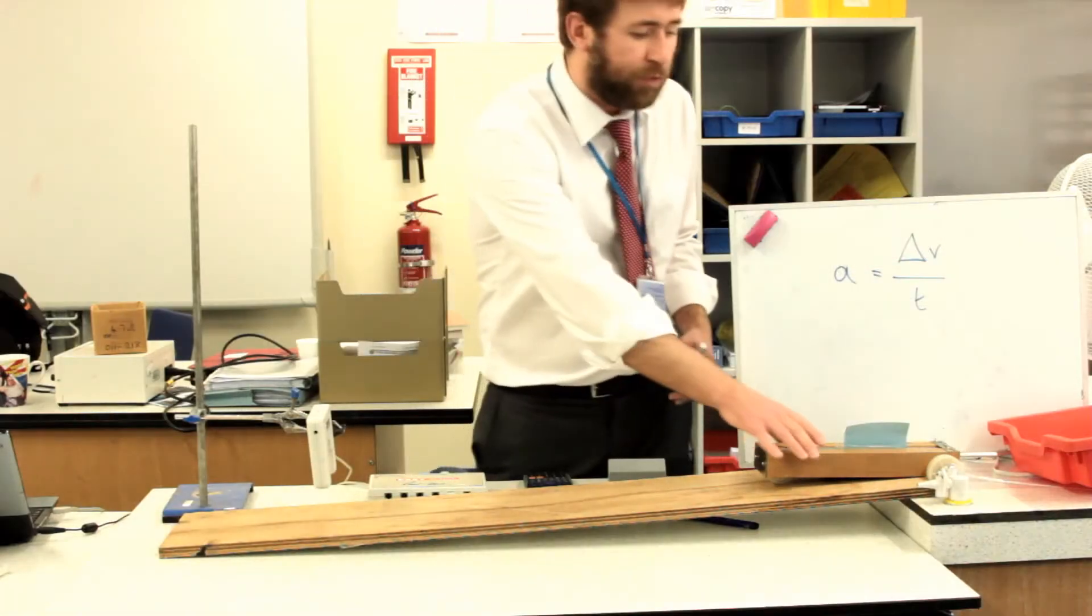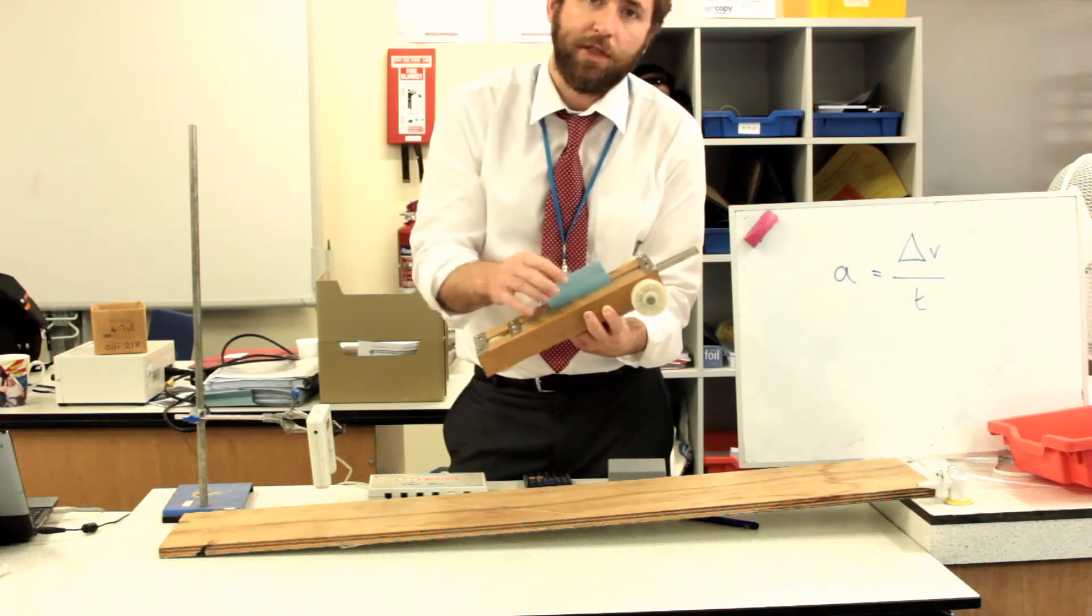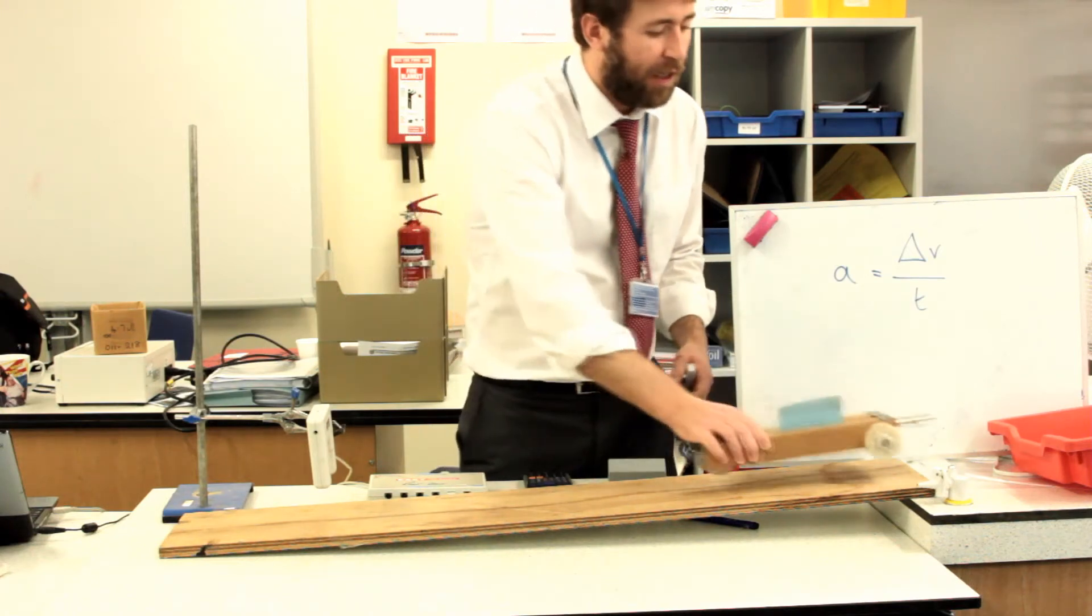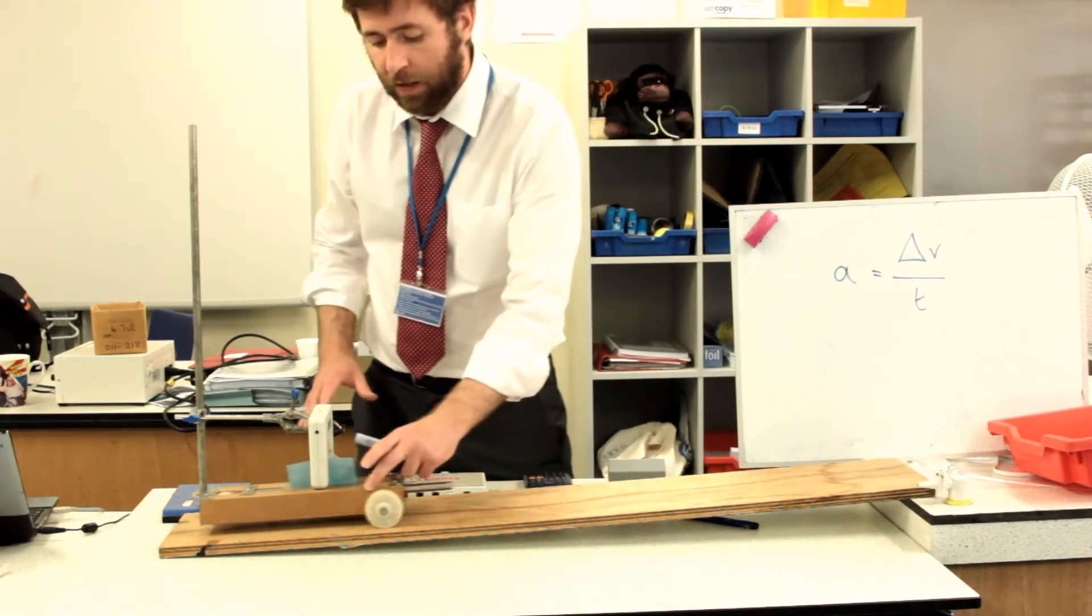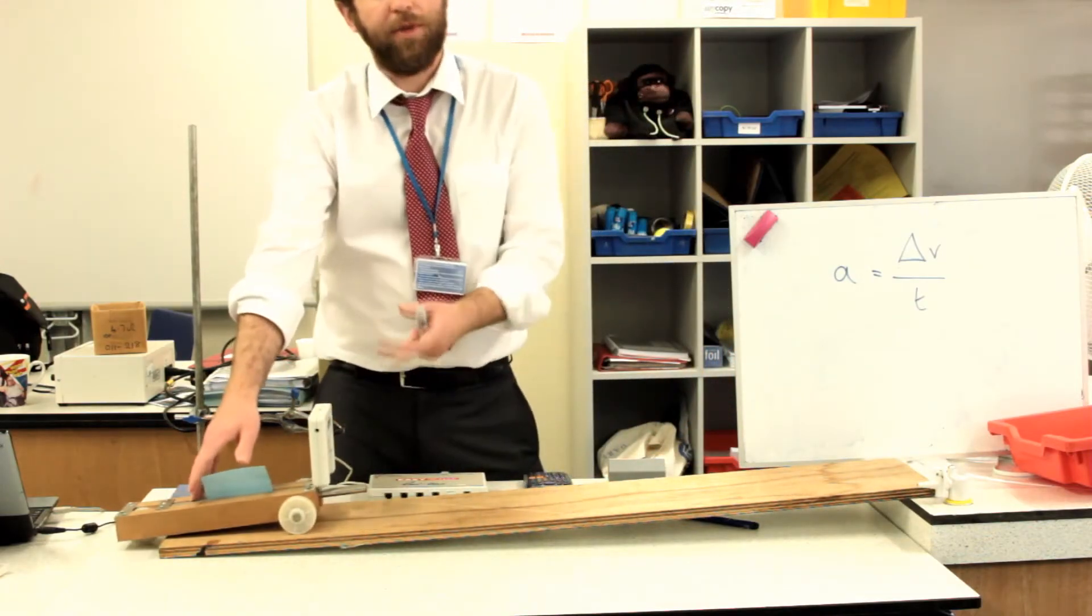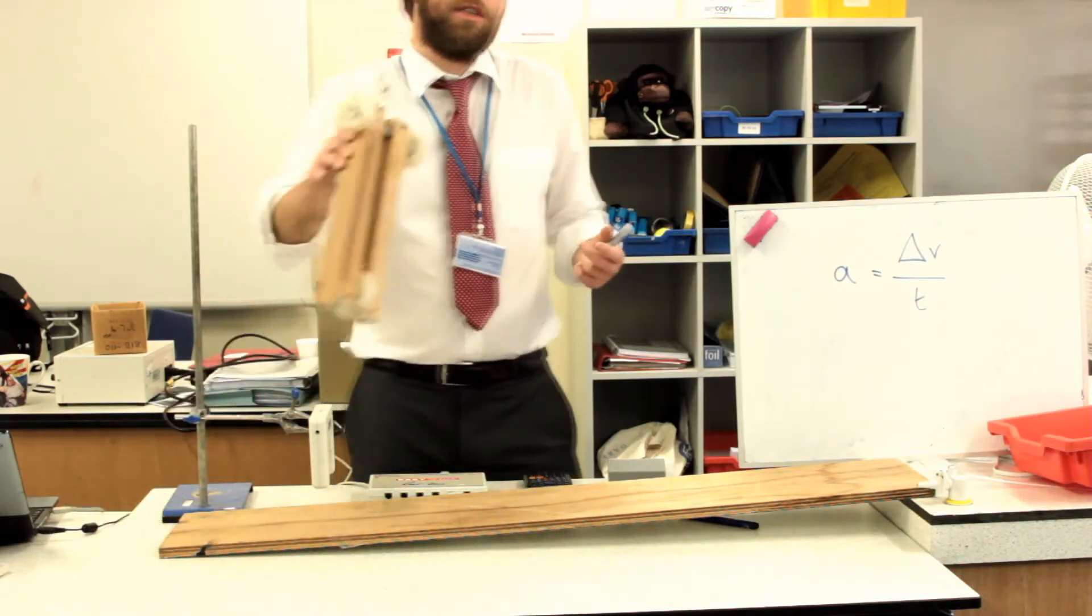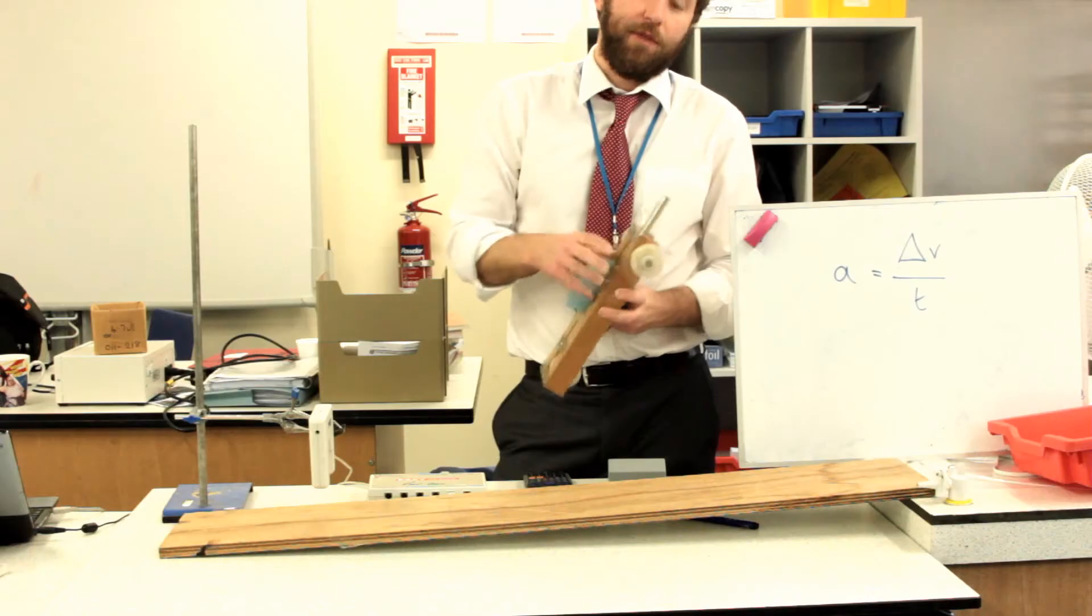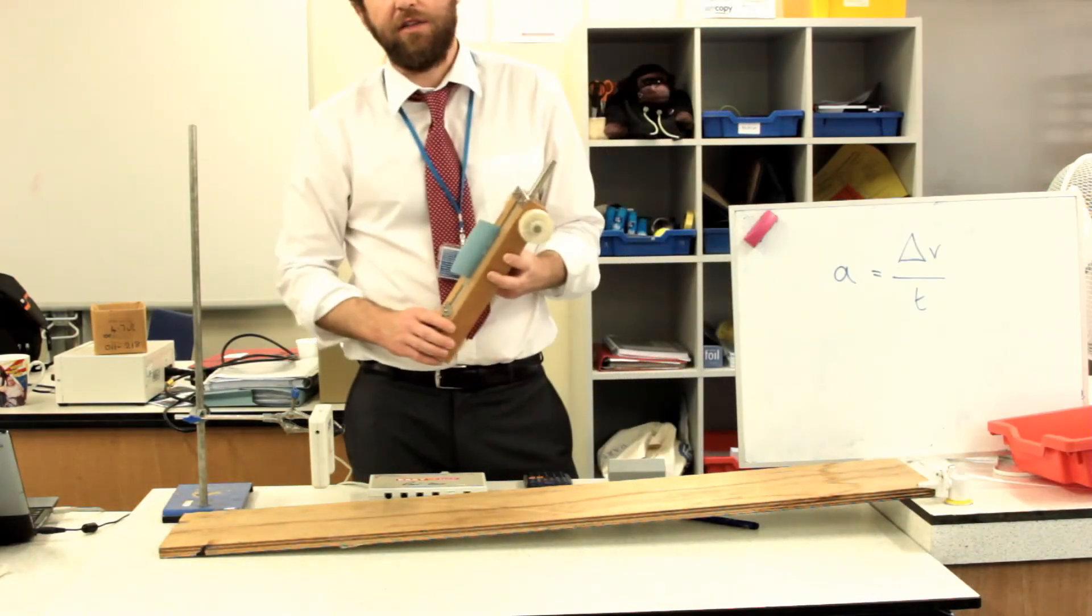So I've told the computer that this card, the length of this disrupt card, is 0.1 meters, 10 centimeters. And it's simply going to measure the time that disrupt card breaks the beam on the light gate. And it's going to simply do speed is distance divided by time. It's going to do 0.1 meters divided by however many seconds it gets.